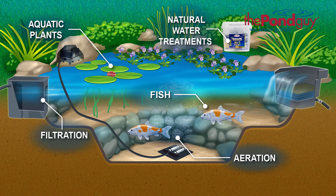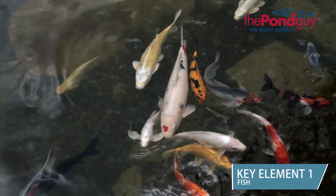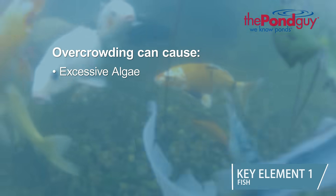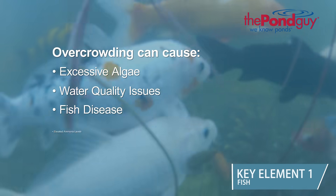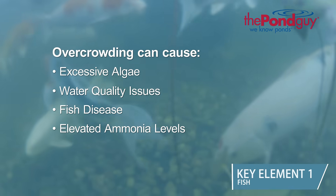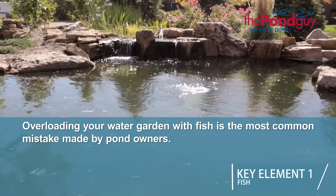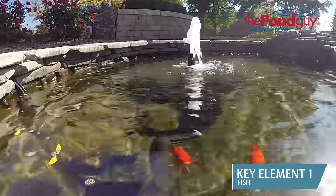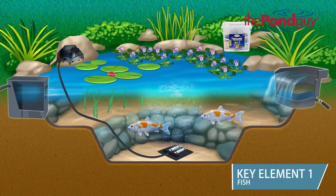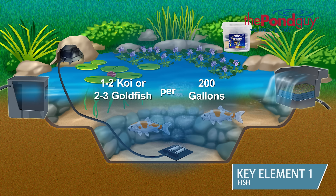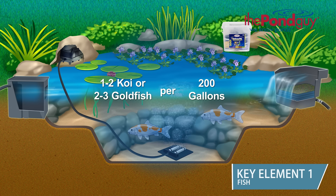The first key element is fish. Fish such as koi and goldfish can add color and excitement to any water garden; however, overcrowding can cause excessive algae, water quality issues, fish disease, and elevated levels of ammonia, which can be fatal to fish. Overloading your water garden with fish is by far the most common mistake made by pond owners. We recommend starting with a smaller fish load — one to two koi or two to three goldfish per 200 gallons of water. Remember, fish will naturally multiply and grow, so keeping fish loads to a minimum ensures your water garden will continue to support them as they age.